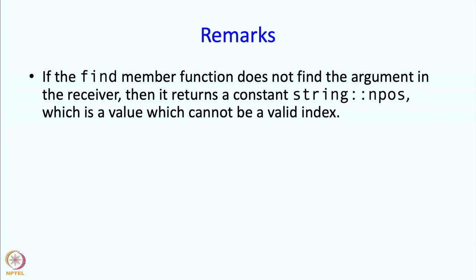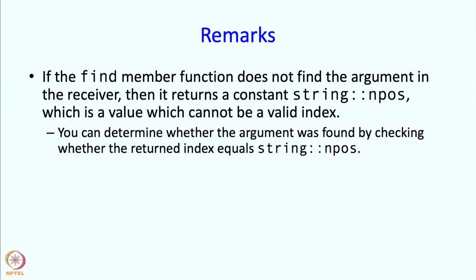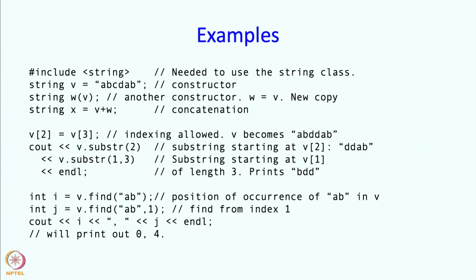The find function needs some explanation because if the find member function does not find the argument in the receiver, then it returns a constant, string colon colon npos. This is not a valid index. What you can do is, you can check whether the returned index equals string colon colon npos. That way you know that the string is not present. Going back over here, if we were looking for say xy, then i would have been set to string colon colon npos. npos probably is some negative value for example, which cannot be the position of any occurrence. That is how you can check whether the string actually appears or does not appear.